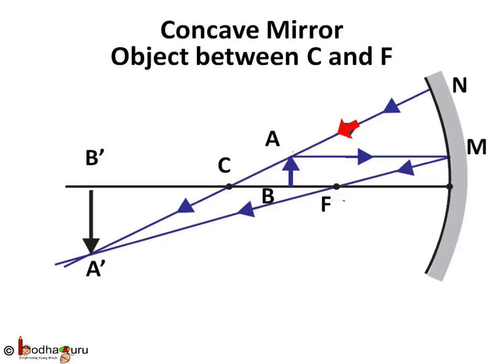So AN and CN will be on the same straight line. Both rays meet at point A'. The rays actually converge, meaning A'B' is a real image of AB. As we already know, a real image is upside down, that is inverted. That's why we see an inverted image on the inner side of the spoon.